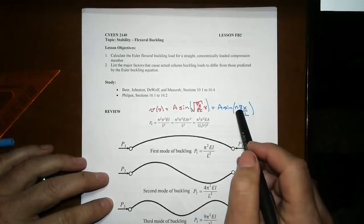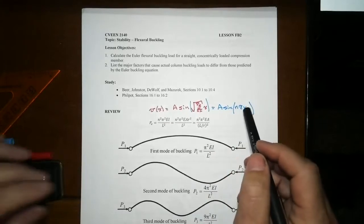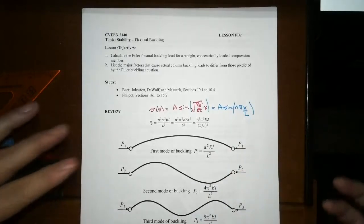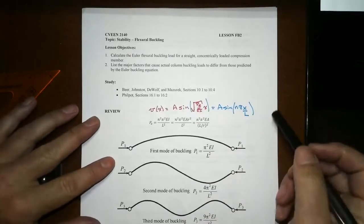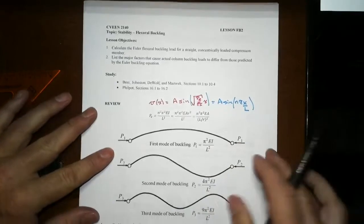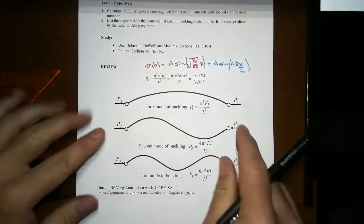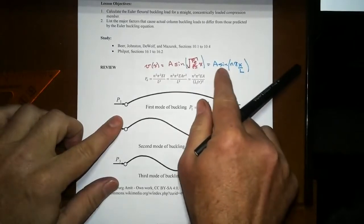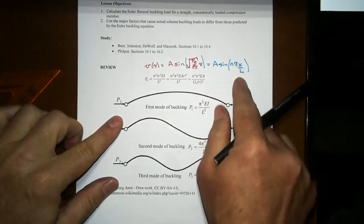And n was equal to these integer values 1, 2, 3, 4, et cetera, on up into infinity. Let's take a look at what happens for different n values. For n equal to 1, when we plot this, we'll have A times sine pi x over L.